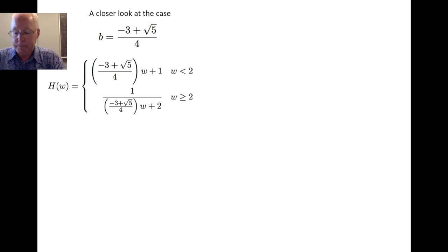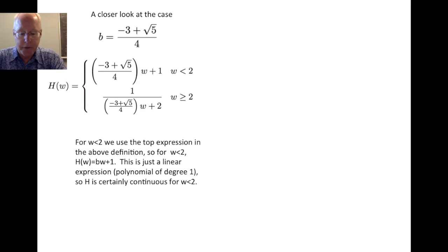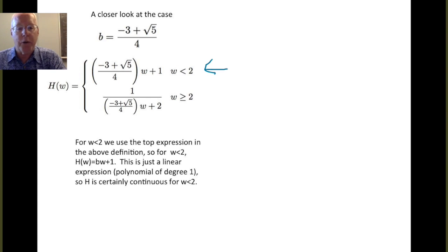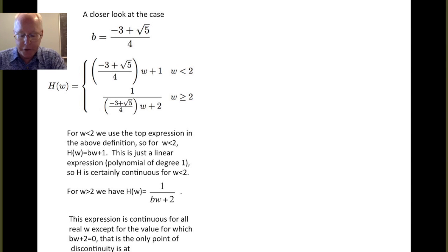Now, as far as being continuous for w less than 2, we use this top expression. This is just a linear equation of the form bw plus 1. It's a polynomial. Those are always continuous. So this is certainly continuous when w is less than 2. Now, for w greater than or equal to 2, we have to deal with this lower piece. And because we have a denominator, we have to make sure that the denominator is never equal to 0 whenever it's being used, which is for the case w greater than or equal to 2. So this expression will be continuous for all real w except for the value for which bw plus 2 equals 0. And so this is the only possible point of discontinuity.